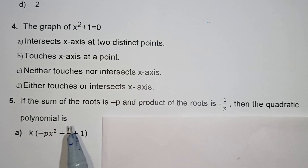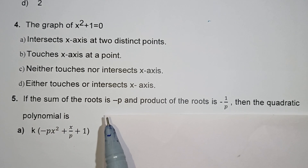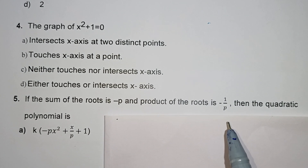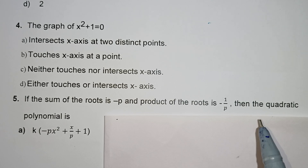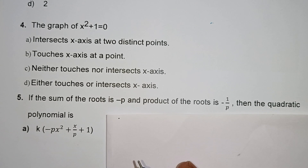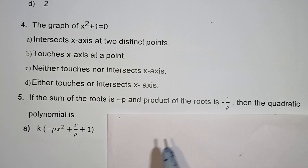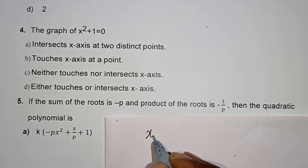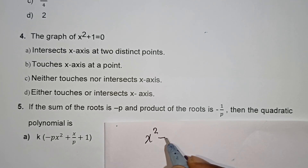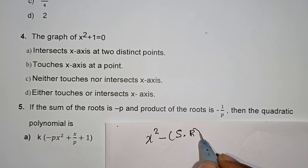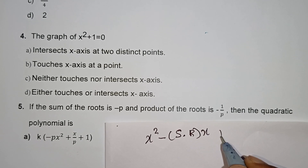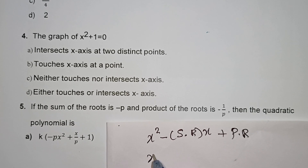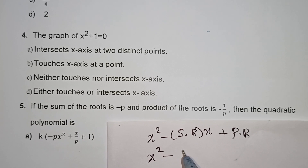Next question: the sum of the roots is minus p, and the product of the roots is minus 1 by p. Find the quadratic polynomial. Using the formula: x² minus (sum of roots)x plus (product of roots). This is the basic formula.